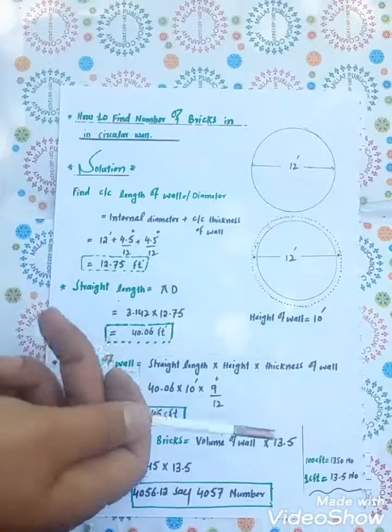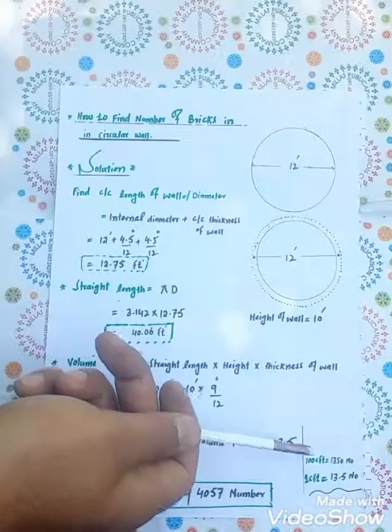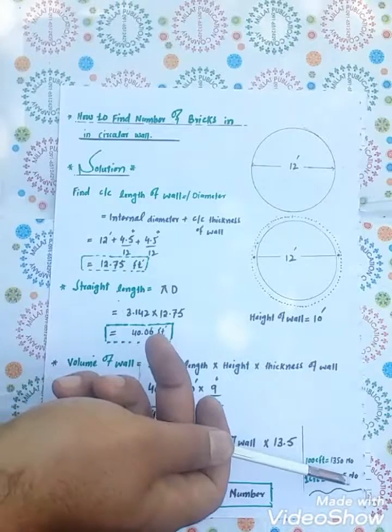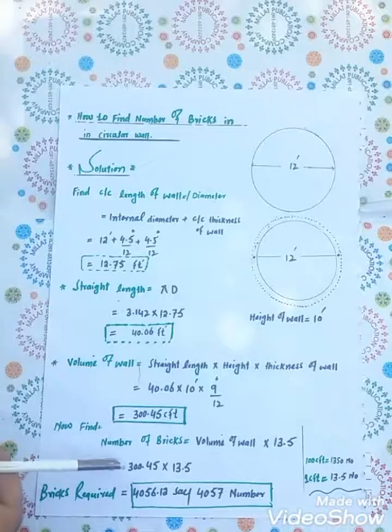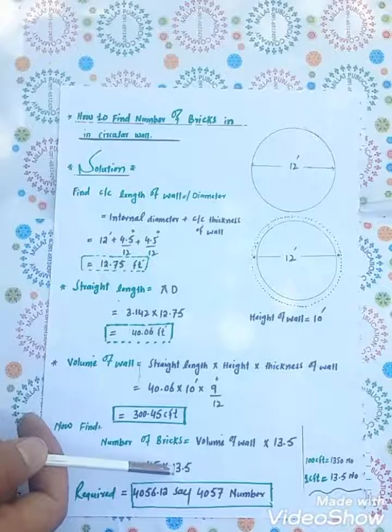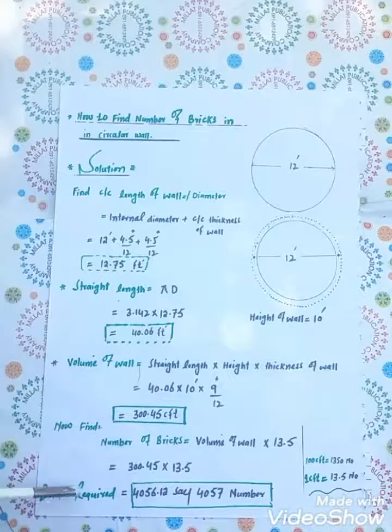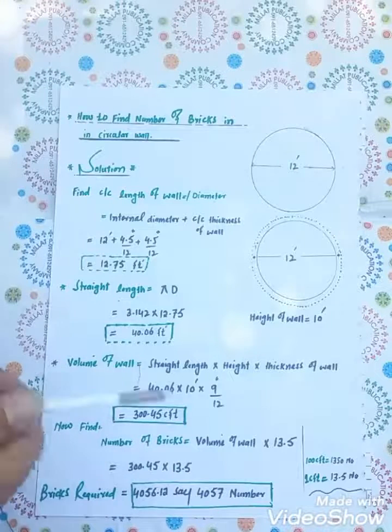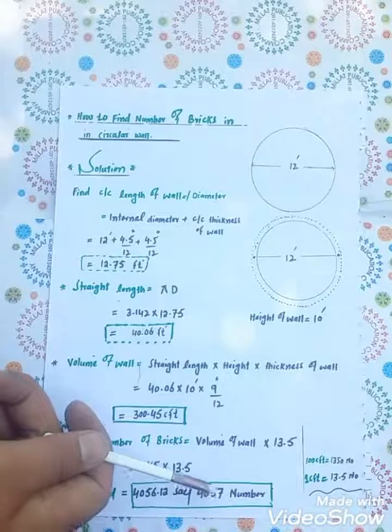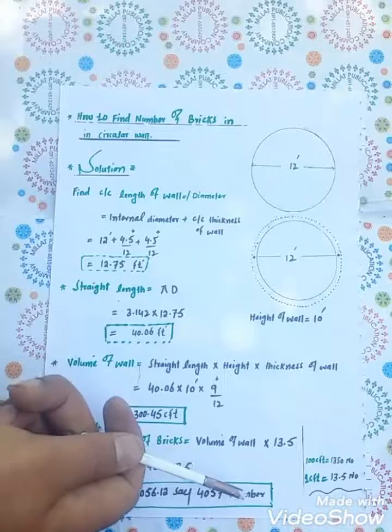Now put the value in formula: 300.45 multiplied by 13.5. Bricks required: 4056.1, to say 4057 numbers.